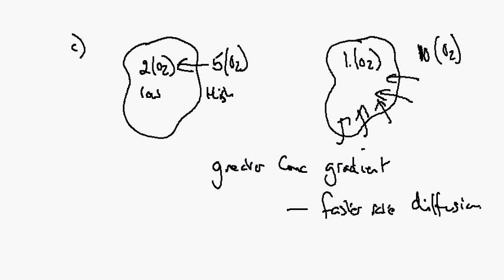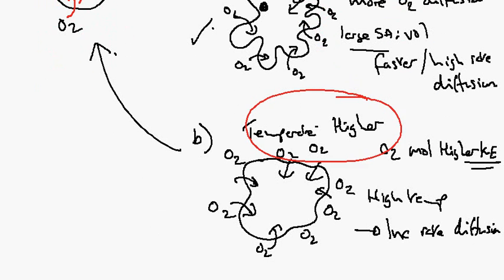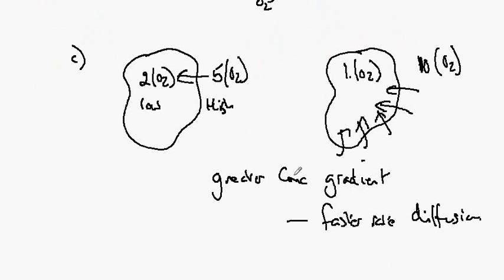Diffusion rates are increased by large surface areas on the cell, higher temperatures, and greater concentration gradients.